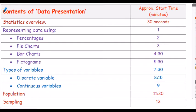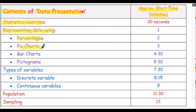Here's an overview of the contents of this video with approximate start times of the various sections shown. The presentation commences with a brief overview of statistics, then we consider representing data using percentages, pie charts, bar charts and pictograms. Next we look at the types of variables, defining discrete variables and continuous variables, and also defining the term population and sampling.